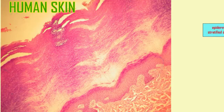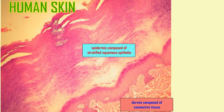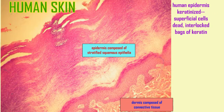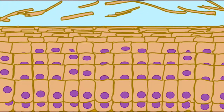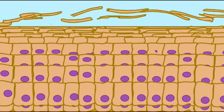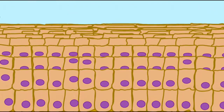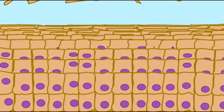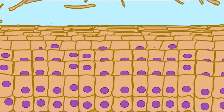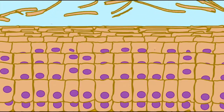While many stratified squamous epithelia in humans are non-keratinized, such as that of the oral cavity, that covering the skin in the epidermis is a keratinized stratified squamous epithelia. The cells die and become dead interlocked bags of the protein keratin. Keratin is largely water-resistant, and so this forms a protective, water-resistant layer.